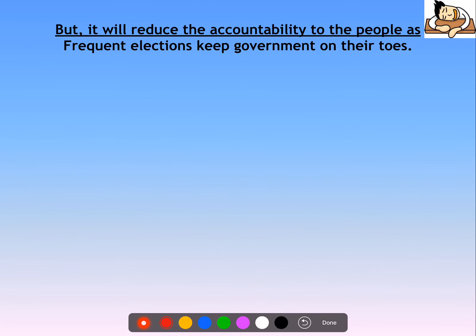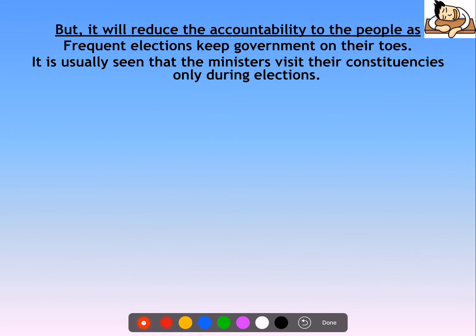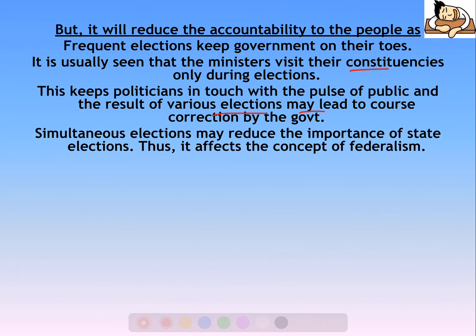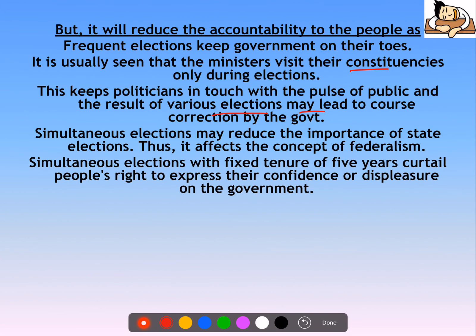The Law Commission and Parliamentary Standing Committees have also recommended simultaneous elections to save money and time. However, accountability will also reduce. Frequent elections keep governments on their toes — ministers visit their constituencies mainly during elections, so frequent elections mean more visits and keeping politicians in touch with the pulse of the public. Results of various elections may lead to course correction by the government. Simultaneous elections may also reduce the importance of state elections, affecting federalism.